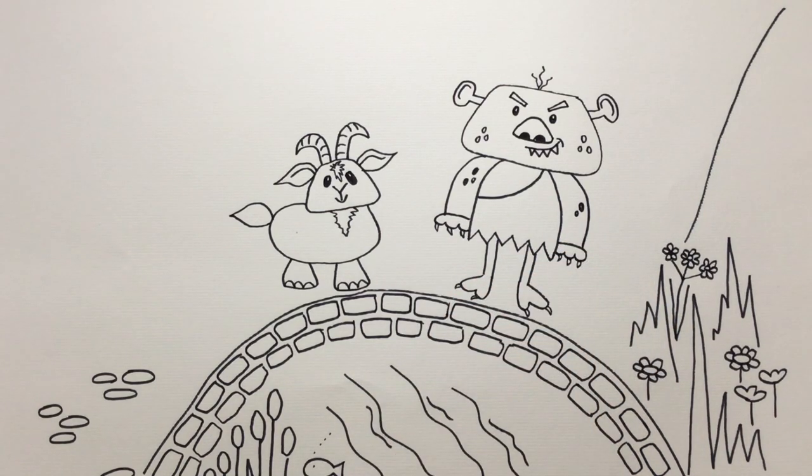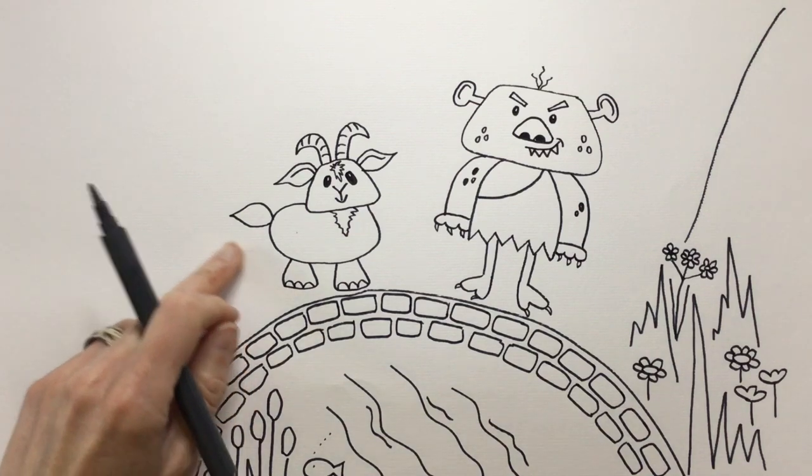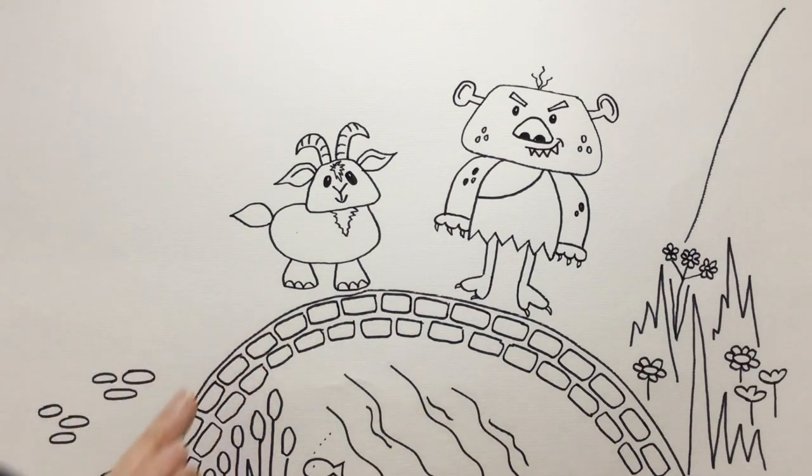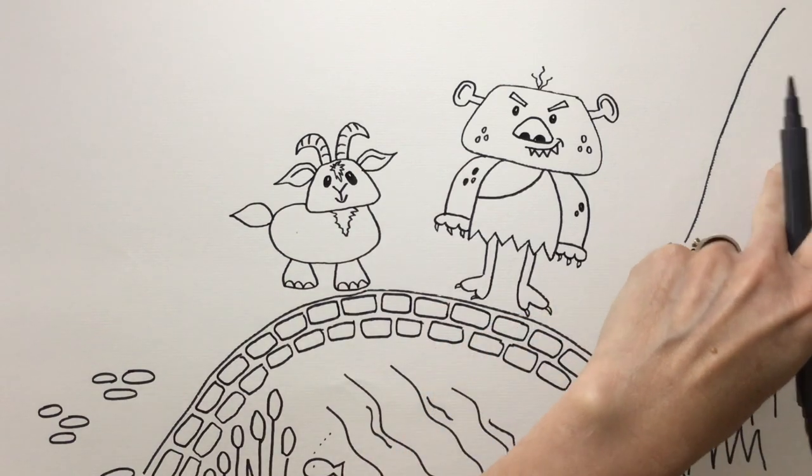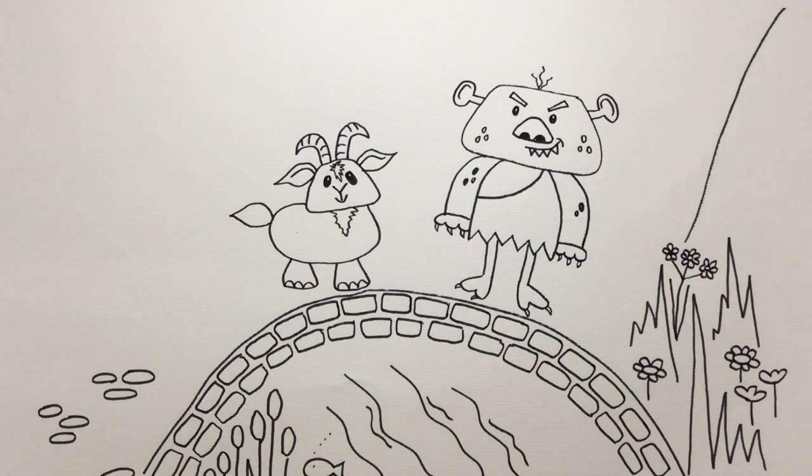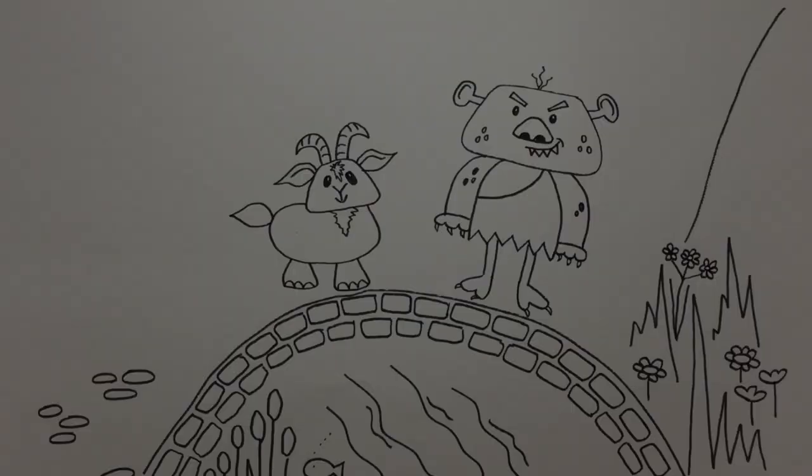There we are. And there you've made your troll and your goat. You could add, if you wanted to, you could add the baby one at the side and maybe you could add the big one already on the other side of the bridge if you like. You can have fun with that. And I look forward to seeing how you get on with it. Have fun! We'll see you next time. Bye!